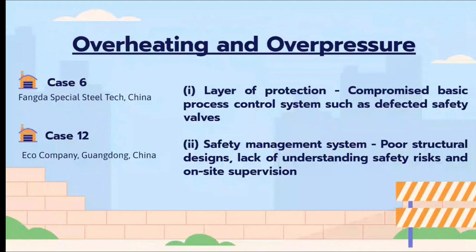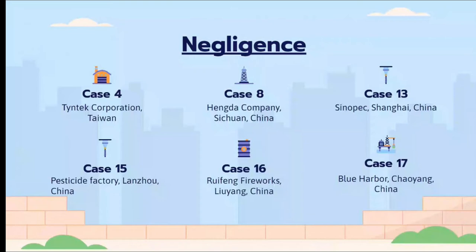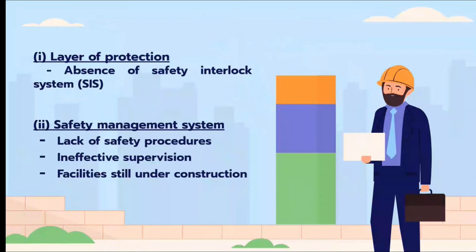The final category before passing the floor is negligence. All cases in this category resulted in explosions. In terms of layer of protection, there was an absence of safety interlock systems. The safety management system lacked safety procedures and had ineffective supervision. Additionally, some of the facilities were still under construction, making it dangerous to operate under those conditions.